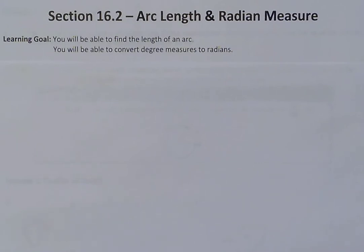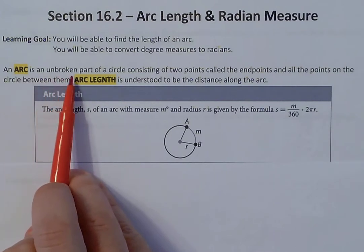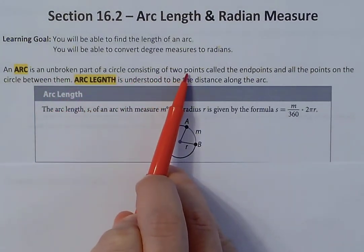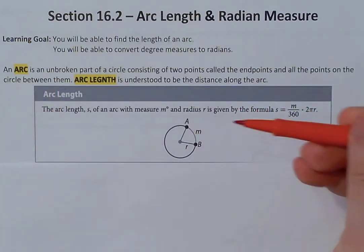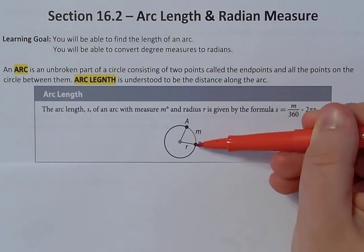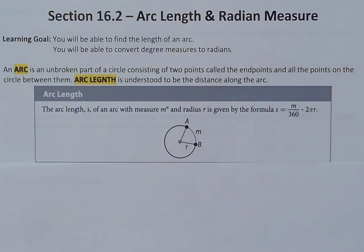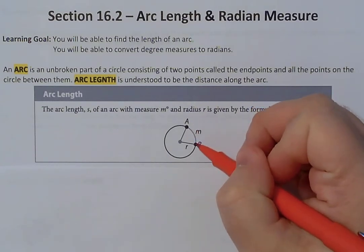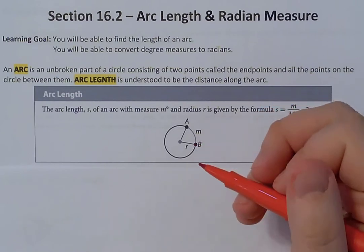So let's first talk about arc lengths and arcs, and then we'll talk about radians. An arc is an unbroken part of a circle consisting of two points called the endpoints and all the points on the circle between them. So arc AB has A and B as the endpoints with all the points in between. It's not a straight line because it's on a circle, so it's curved — that's why we call it an arc and not a line segment.